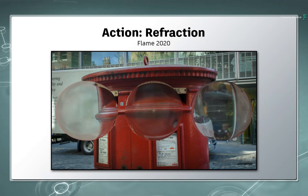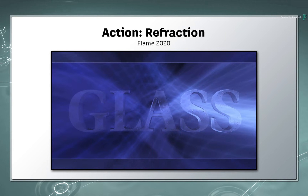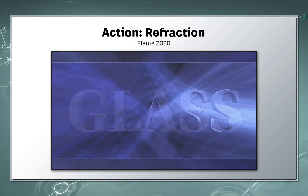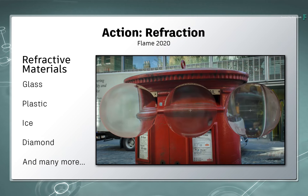For those of you who are not familiar with the concept, refraction refers to the way that light distorts as it passes through an object that has transparent or semi-transparent properties. I am referring to objects such as glass, plastic, ice, diamonds, and the list goes on. Each material has its own refractive properties and you can now emulate this in the Flame 2020 products.